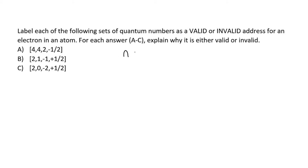We're looking at the quantum numbers: you have your primary quantum number, your angular momentum quantum number, your magnetic quantum number, and your magnetic spin quantum number. Your primary quantum number is your shell, and your angular momentum quantum number is your subshell.